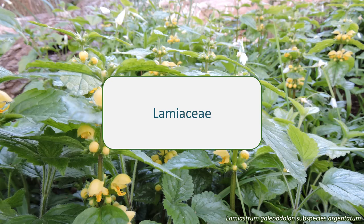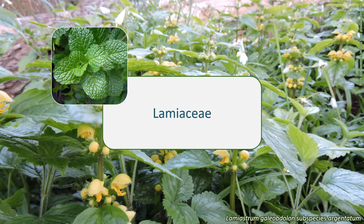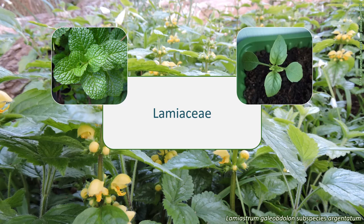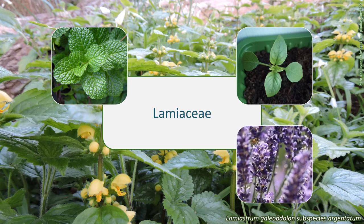The Lamiaceae contains a huge number of species that we use as medicinal and culinary herbs like mint, rosemary, basil and sage. We use them as garden plants and for wildlife, like lavender, catmint, coleus, and the variegated cultivar of yellow archangel, Lamiastrum galeobdolon subspecies, which is a common garden escape.